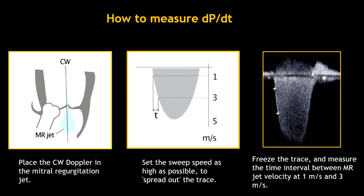Here I am going to show you step by step how to measure the DPDT on your echocardiogram. First, place the continuous wave Doppler in the mitral regurgitation jet. The apical four-chamber view is the best view to do this. It is highly recommended to set the sweep speed as high as possible to spread out the trace. Then, freeze the trace and measure the time interval between the mitral regurgitation jet velocity at 1 meter per second and 3 meters per second.